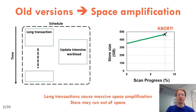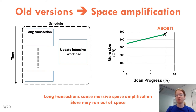Initially the store is 350 gigabytes. The size of the store grows rapidly, and we could only scan 8% of the store before running out of disk space. On a bigger drive, this single scan causes the store to quadruple in size, so that's a 3x space amplification.